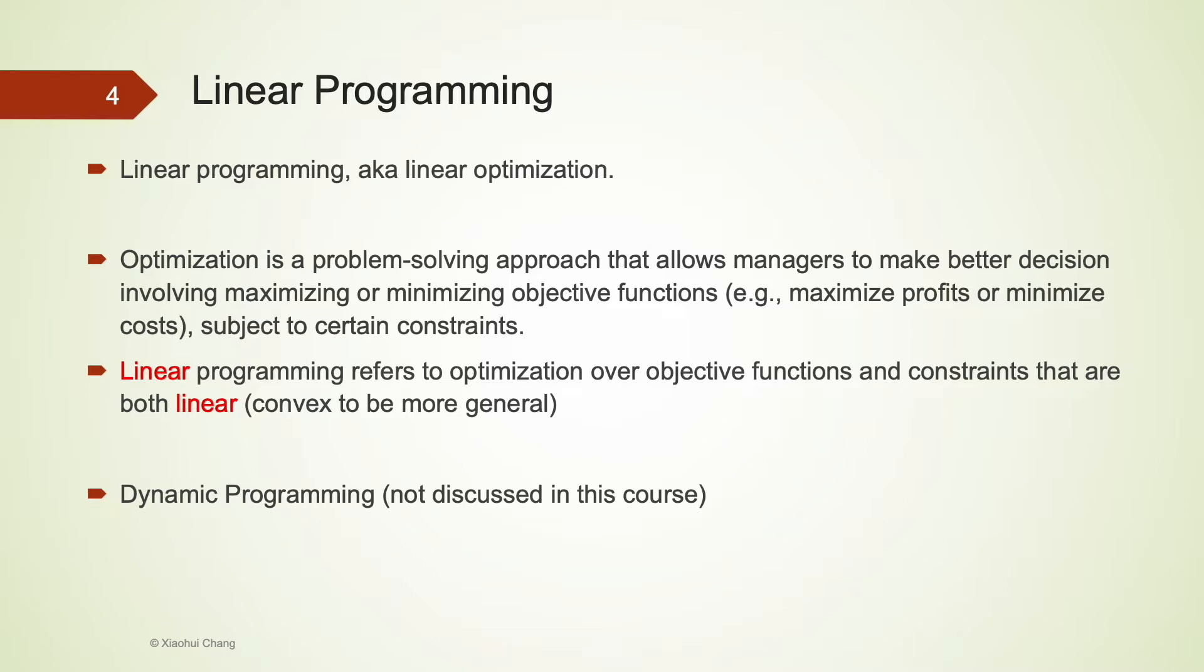Optimization allows managers to make better decisions involving either maximizing or minimizing some objective functions subject to certain constraints. Linear, in linear programming, refers to that both the objective functions and constraints are linear. This is, in fact, the easiest type of programming, compared to other programming techniques, for example, dynamic programming.